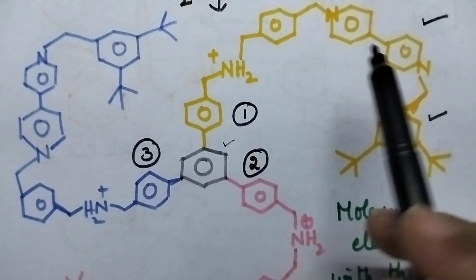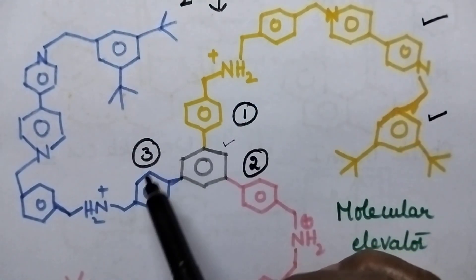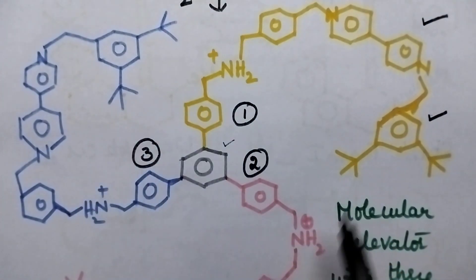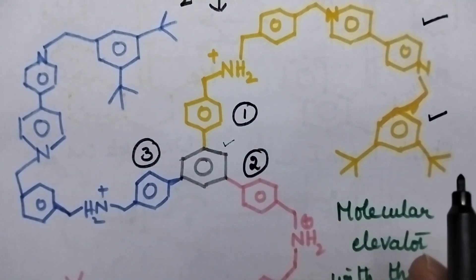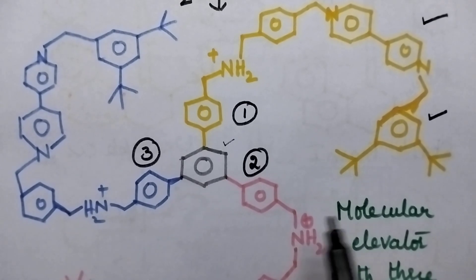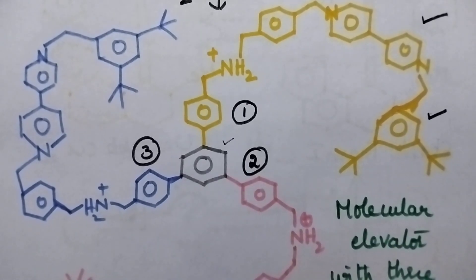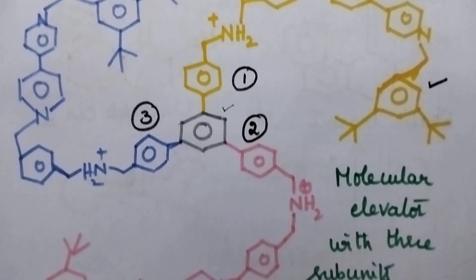The same structure will be repeated at the second and third position and finally it results in the formation of a big molecule that is called the molecular elevator. It is a simple molecular elevator obtained by the joining of three subunits.